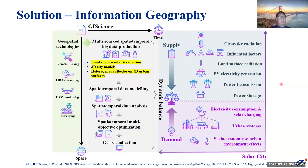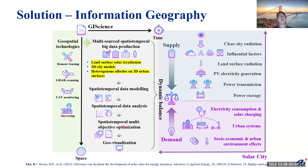I think information geography is the right path to answer these critical questions. To start with, we may utilize geospatial technologies to build multi-sourced spatial temporal big data, which can be used to model the light field distribution on 3D urban surfaces. Further, we may analyze the spatial temporal distribution. If we want to utilize the light resource, we may develop multi-objective optimization — for example, maximizing solar electricity generation while minimizing the usage of urban surfaces — and also do geo-visualization.